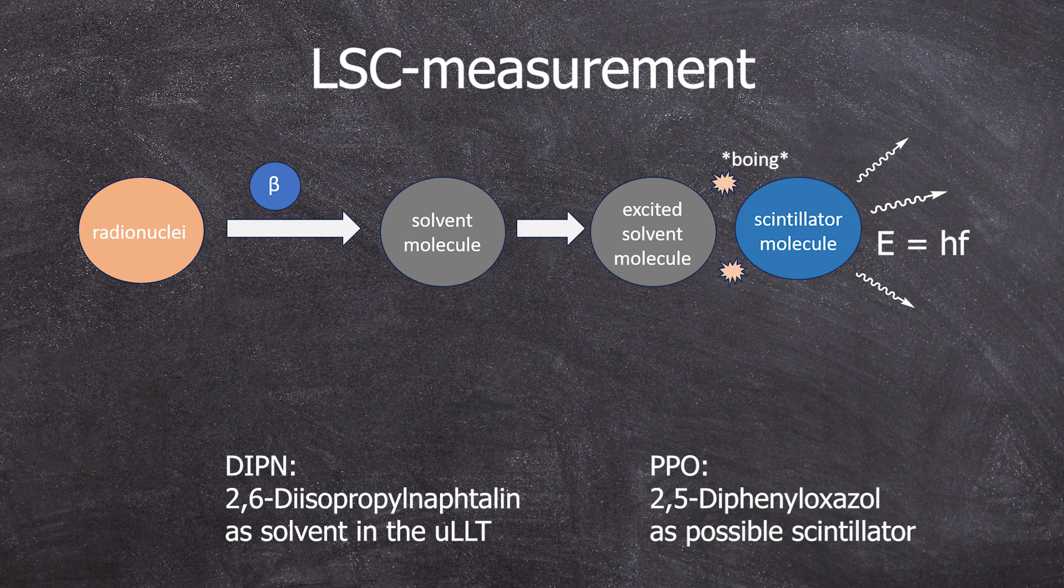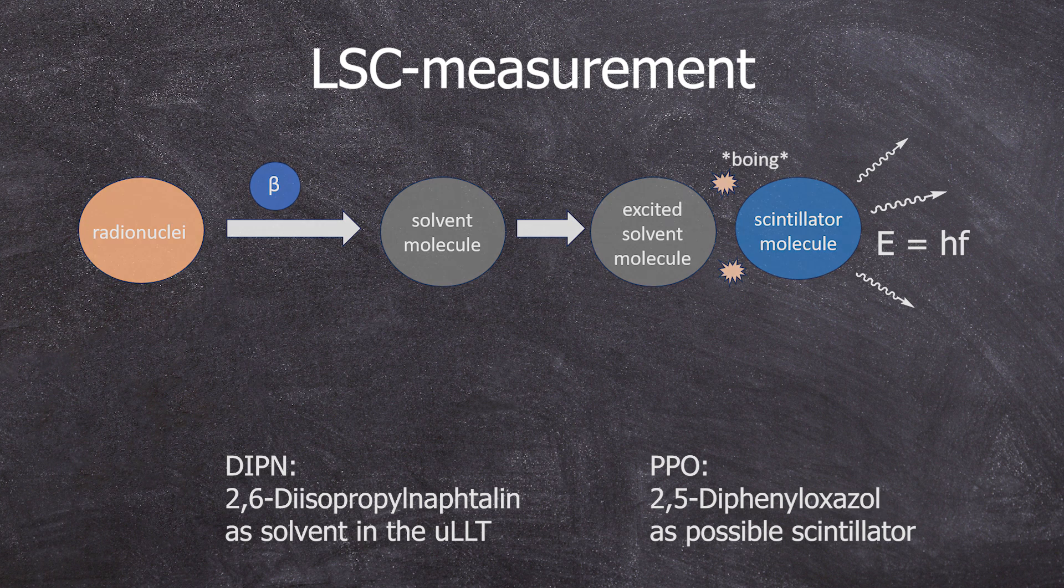However, the scintillator can also be excited simply by light and then fluoresce. No matter how weak this fluorescence is, it would distort our measurement results, so we have to wait until this light-induced excitation subsides and the scintillator is only excited indirectly by radioactive decay in our sample.